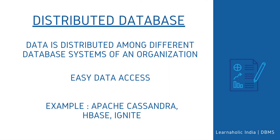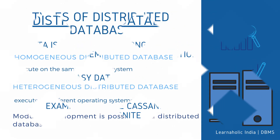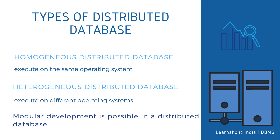The next type of database is distributed database. Unlike a centralized database system, in distributed systems, data is distributed among different database systems of an organization. These database systems are connected via communication links, which help end users to access the data easily. Examples of the distributed database are Apache Cassandra, HBase, Ignite, etc. It can further be divided into: Homogeneous distributed database — those systems which execute on the same operating system, use the same application process, and carry the same hardware devices; and Heterogeneous distributed database — those systems which execute on different operating systems, under different application procedures, and carry different hardware devices.